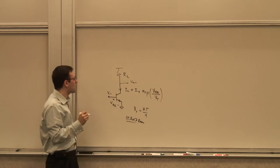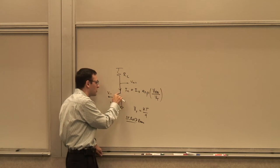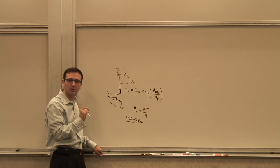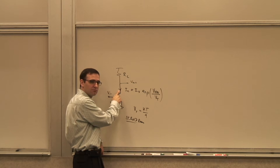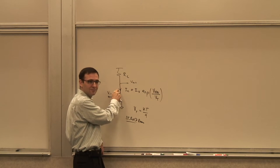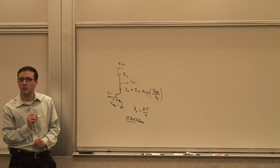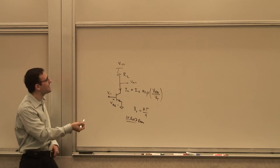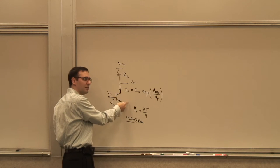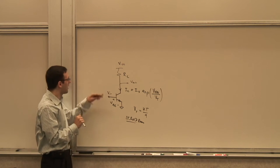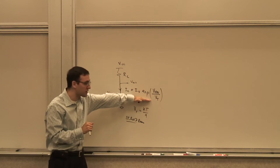The transistor has to be kept in the forward-active region. The junction between base and collector should be reverse-biased, which means the collector voltage has to be higher than the base voltage. So the collector resistor is connected to a positive supply voltage VCC. This is the most basic amplifier: a voltage-controlled current source, converting back to voltage through a resistor, with a supply voltage high enough to maintain the transistor in the forward-active region.